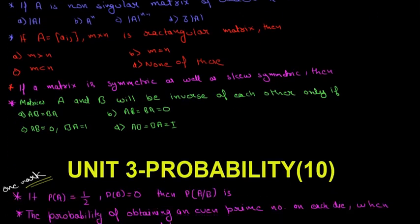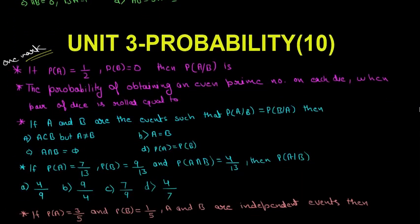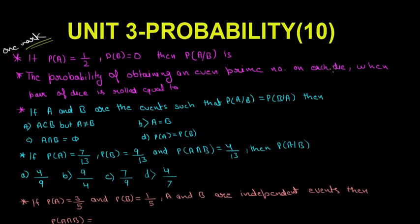Let's move on to the next unit, which is Unit C: Probability. Probability is the last unit of your syllabus, but I added it here because in the next video I will cover the whole Calculus unit. Calculus has about 45 marks weightage — it covers like half of your syllabus — so I will make a separate video on it. Probability has 10 marks weightage.